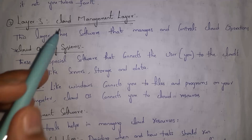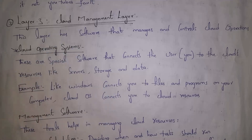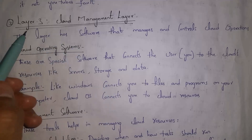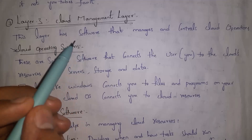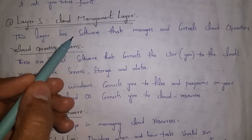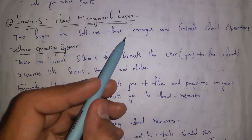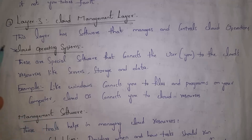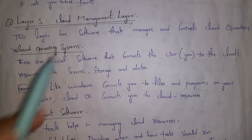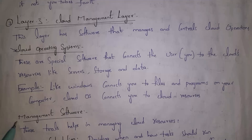Next is the cloud management layer. This layer contains software used to manage and control cloud operations. There are two types of software in the cloud management layer: cloud operating systems and management software.